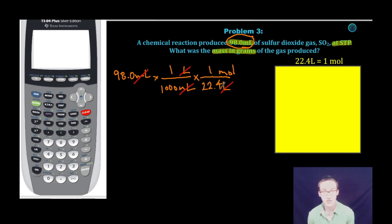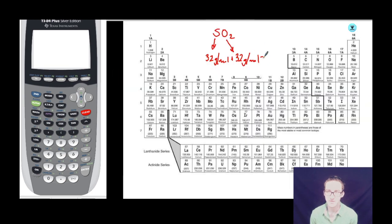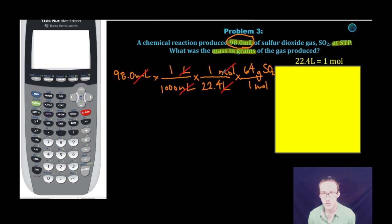To go from moles to grams, it's just a quick conversion using your periodic table. So, moles to grams of SO2. The molar mass of sulfur dioxide is about 64 grams per mole. Notice again my units of moles will cancel out, and I'll be left with the desired units of grams of SO2.